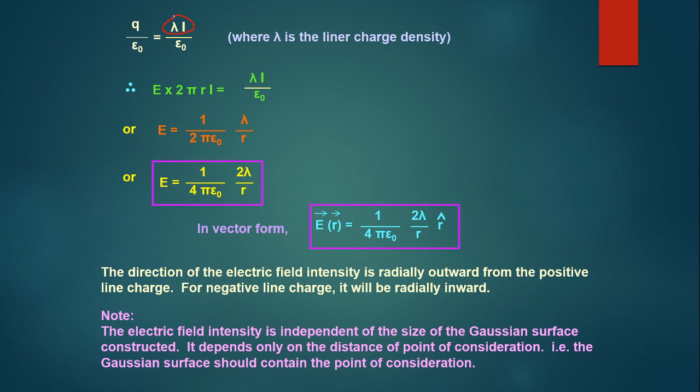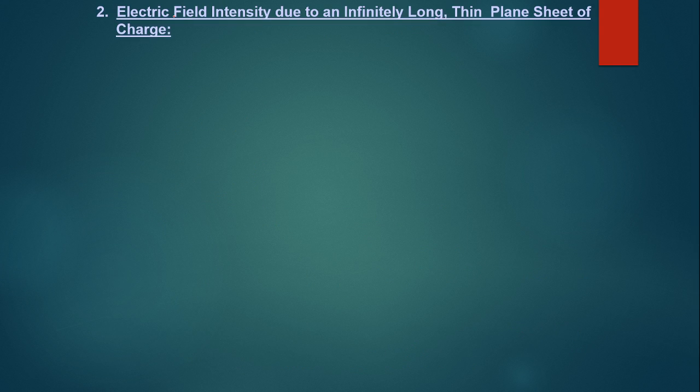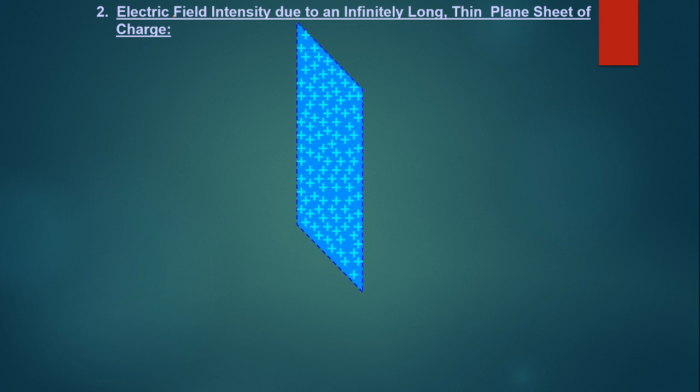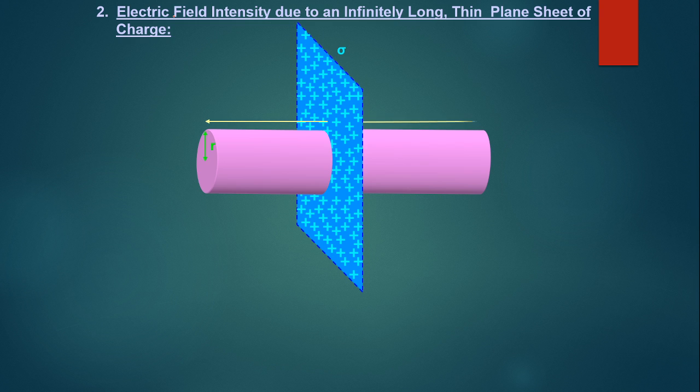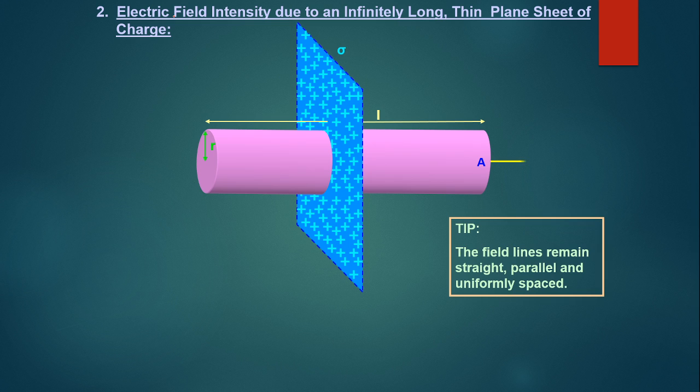Now let's talk about another application and that is electric field due to infinitely long plane sheet. Now we have a straight line. Now we will talk about the sheet. So first we will consider a charge sheet. The two sides are charges. If the sheet is vertical, then the electric field will be in both sides, one side and one side. First we have a closed surface, then we have R and L, then we have a point.